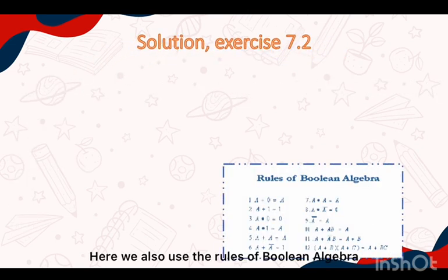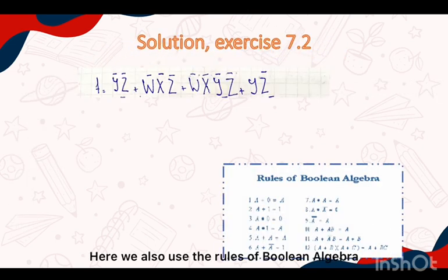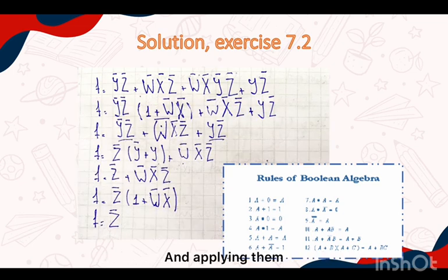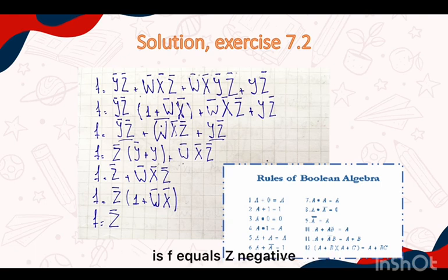Here we also use the rules of Boolean algebra to simplify the function. Applying them, in the end we have that the result is f equals z negated.